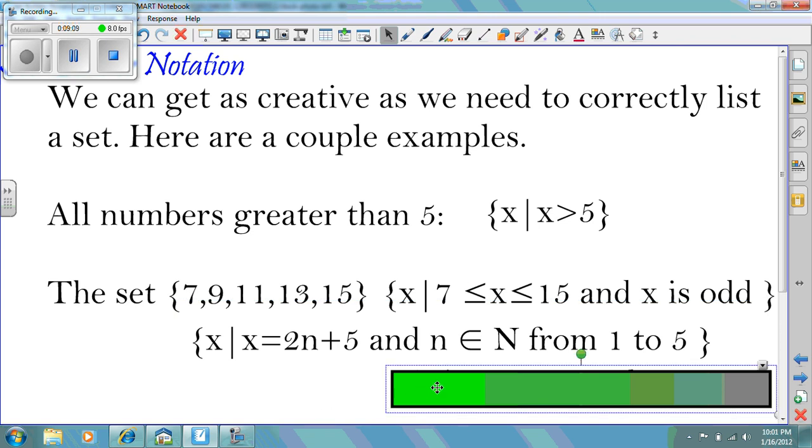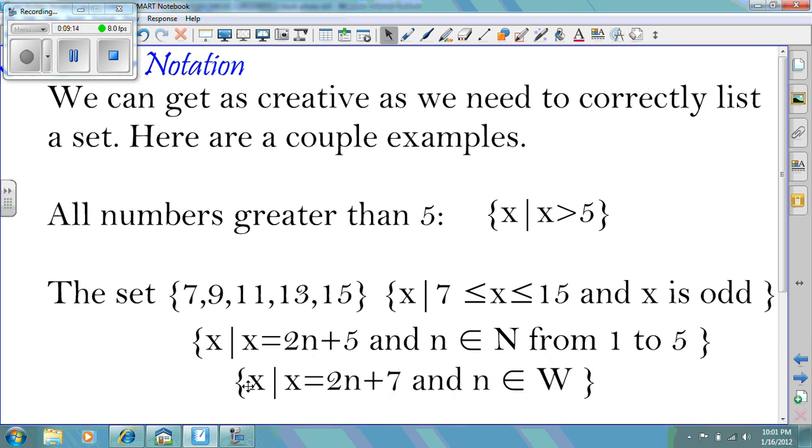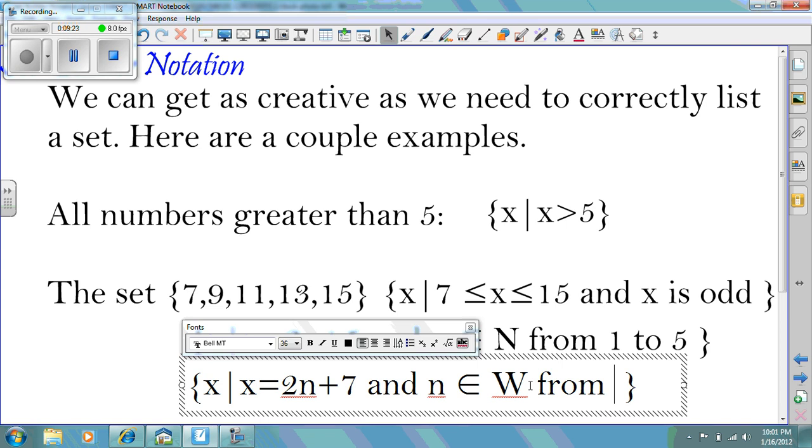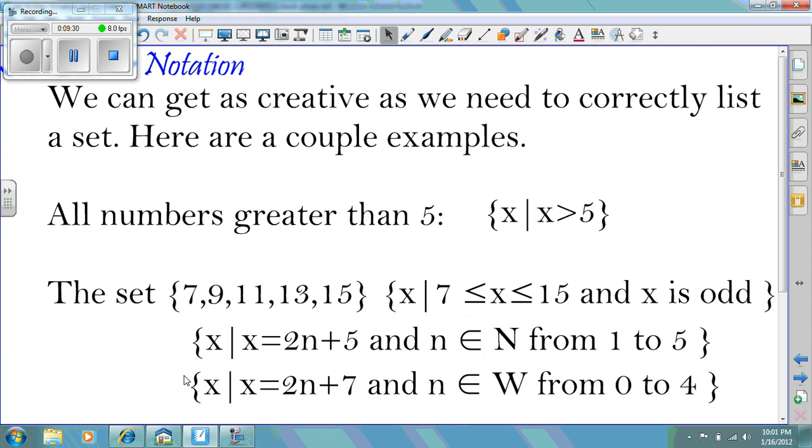Furthermore, we could expand it to whole numbers instead of the natural numbers. So for instance, the set of all X, such that X equals 2N plus 7, and N is an element of the whole numbers, from 0 to, in this case, we're going to have to put in 4. So as we can see, this particular set has many different ways that we could list in set builder notation. You just need to pick one that is appropriate and works to generate the exact list that you're looking for.